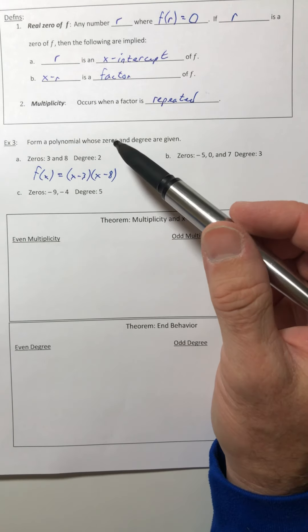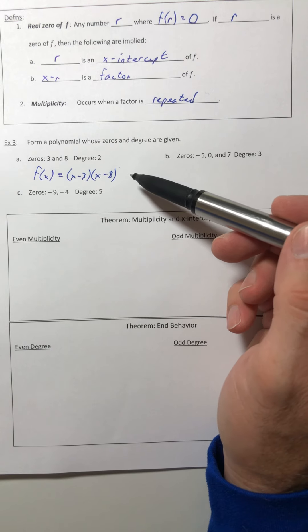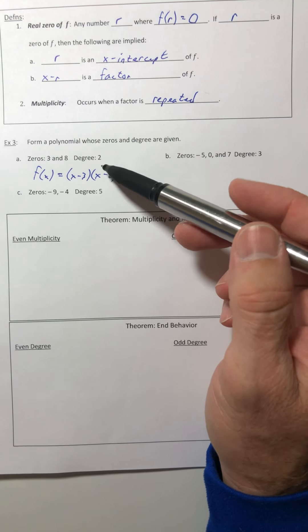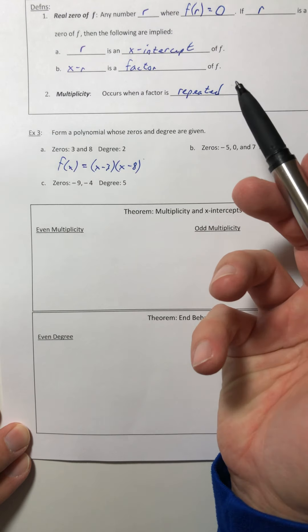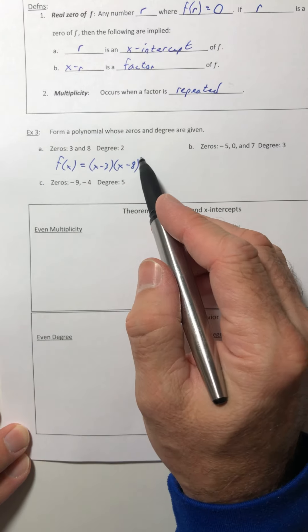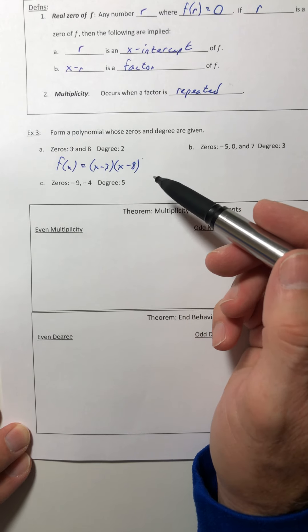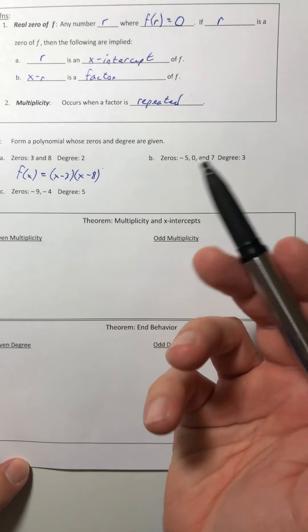And that exponent just implies that that factor has been repeated, which is that multiplicity that we're talking about. So that's how you know if it's got a multiplicity or not. If there's an exponent other than one, then you have multiplicity of something.